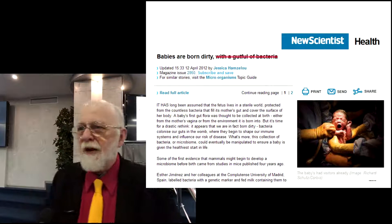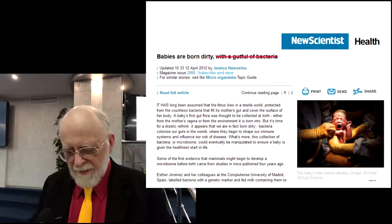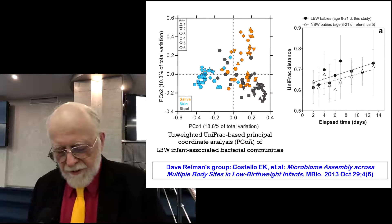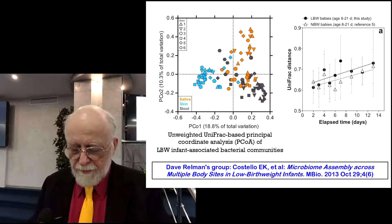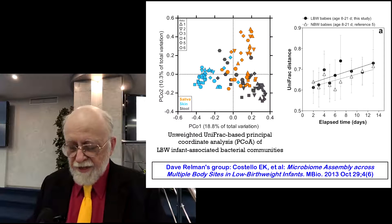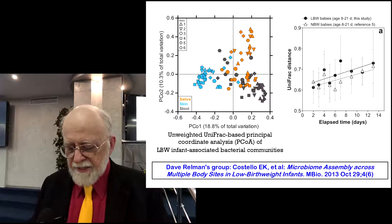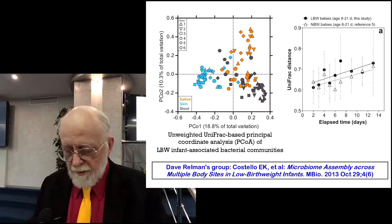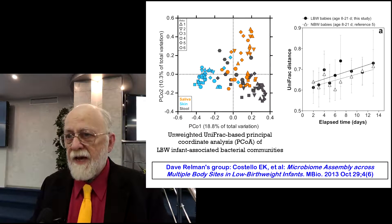So where do these microbes come from? Well, firstly, you're born with them. Babies are born dirty with a complete set of bacteria. The work with Dave Rollman's group at Stanford showed that there are a lot of bacteria sampled at two days, and the change in bacterial balance between two and fourteen days of life is relatively minimal — because most of the microbes were there at birth.